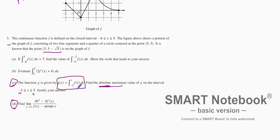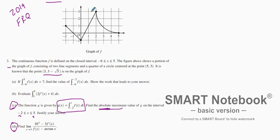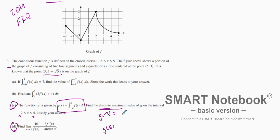If you're asked to find absolute minimums, we know that this function right here is continuous, and therefore G is also continuous. We can apply the Extreme Value Theorem. So in order to figure this out, we want to find G of negative 2 and G of 5. We know that G of negative 2 — plugging in — is the integral from negative 2 to negative 2 of f(t) dt, which equals zero.